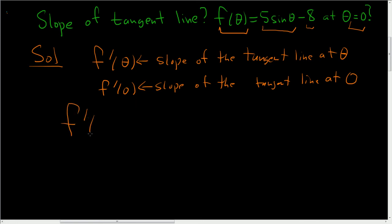So f prime of theta, this is 5 times the derivative of sine theta is cosine theta, and the derivative of 8 is 0, so minus 0. So f prime of theta is just 5 cosine theta.